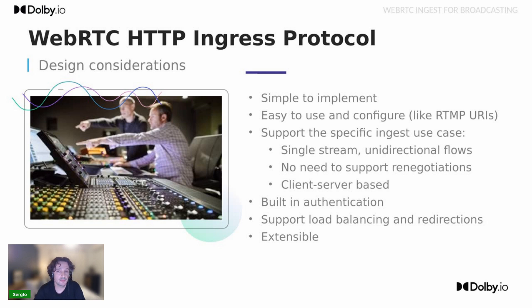In this effort to make WHIP easier to adopt, the protocol must obviously be ready for scaling and commercial deployment. It must support basic functionalities like authentication, load balancing, and redirection. The protocol also needs to be future-proof by allowing it to be extended with new functionalities.